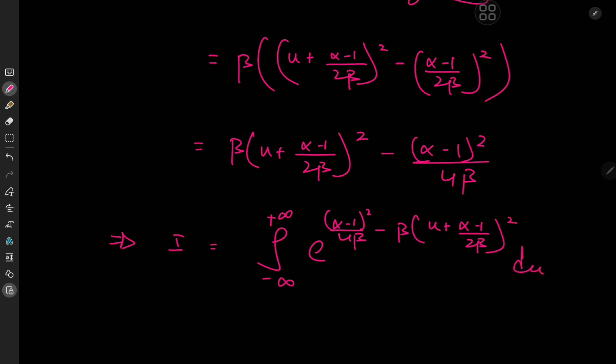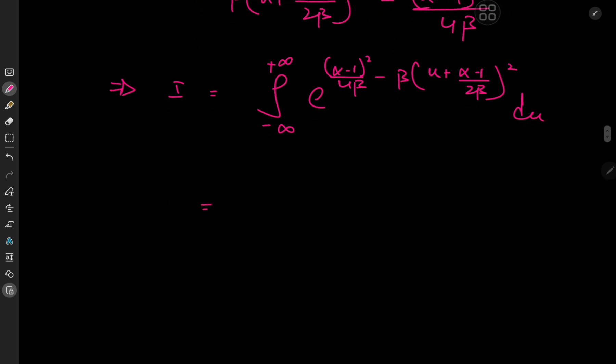And we know how exponential function multiplication works, so we can write this as a factor of this thing here outside the integral. So we have e to the alpha minus 1 squared divided by 4b times the integral from negative to positive infinity of e to the negative beta times u plus alpha minus 1 divided by 2b squared du. And now all we need is a nice little substitution.